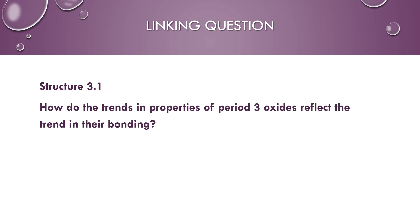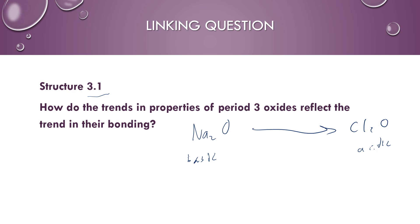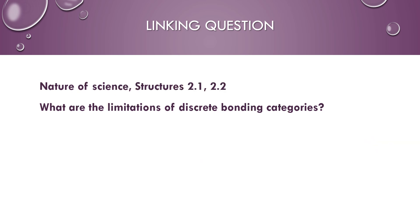The linking questions for this topic connect it to Structure 3.1, which covers the properties of the period 3 oxides and periodicity. Going from sodium oxide across to Cl₂O, the oxides to the left of the periodic table are more likely to be ionic in character, while moving across they become more nonmetal oxides. Nonmetal oxides tend to be more acidic, and metal oxides tend to be more basic — that periodic trend also relates to the shift from ionic to covalent to giant covalent bonding.